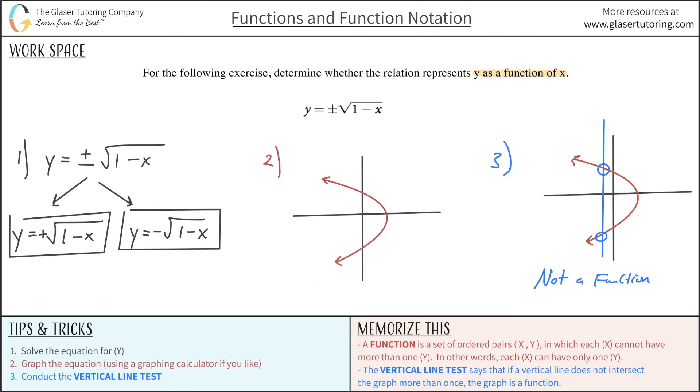As long as it intersects more than once, it could intersect 2, 3, 4, 5, 18 million times. Doesn't matter. It's not a function. Alright? So this thing that they gave us, not a function.